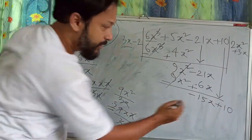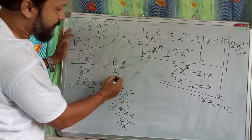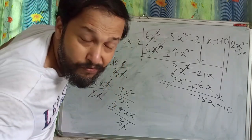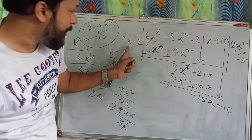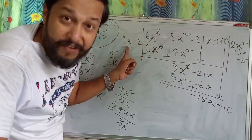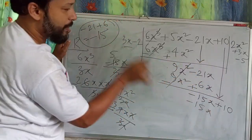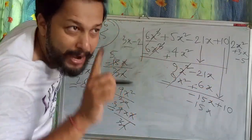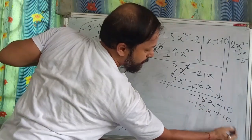Again, first term by first term: minus 15x divided by 3x. The x's cancel, and 3 fives are 15, so minus 5 is left. We write minus 5 in the quotient. By minus 5, multiply the divisor: minus 5 times 3x gives minus 15x, and minus 5 times minus 2 gives plus 10.